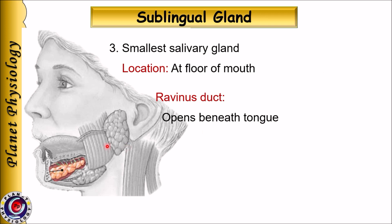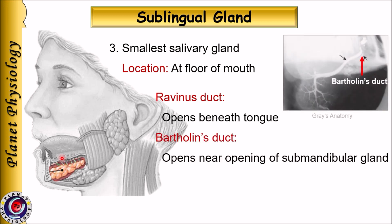The third type of gland is the sublingual gland, which is the smallest salivary gland and is located at the floor of the mouth. Its secretion is poured into the oral cavity near the summit of the sublingual fold by the duct of Rivinus. There are about 8 to 20 sublingual ducts. Sometimes a major sublingual duct called Bartholin's duct is formed from the anterior part of the gland, which opens near the orifices of the submandibular gland. Here is the submandibular sialogram showing Bartholin's duct.